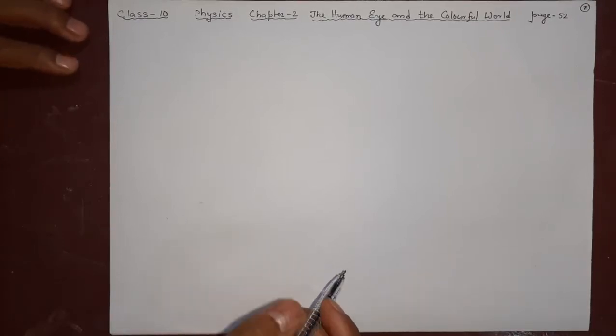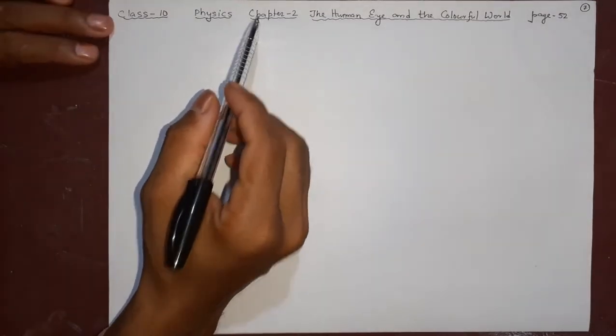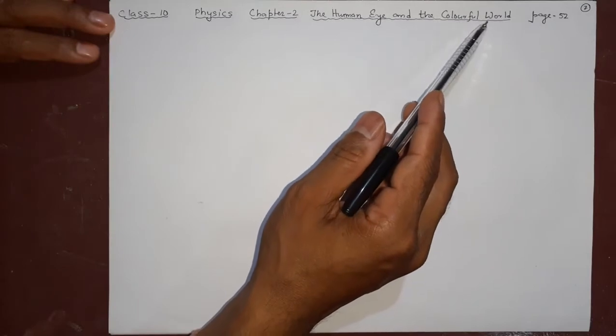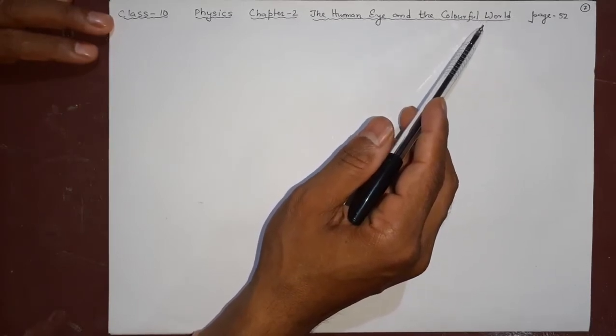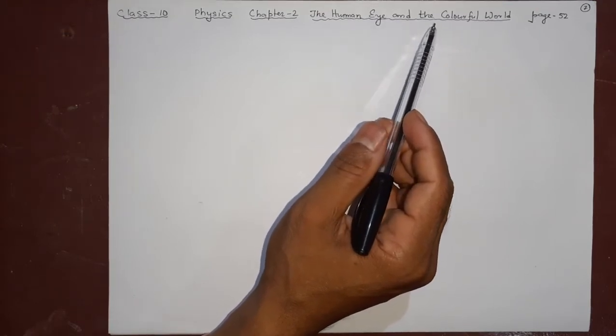Welcome viewers to SD Online Classes. This is Class 10 Physics, Chapter 2: The Human Eye and the Colorful World. Page numbers in your textbook will be 51-52. Before doing some numericals where we have reached,